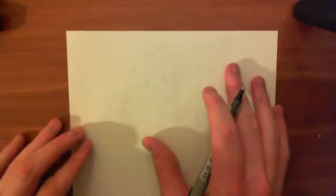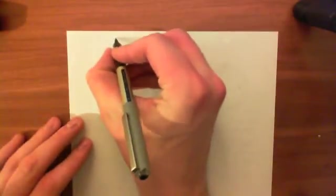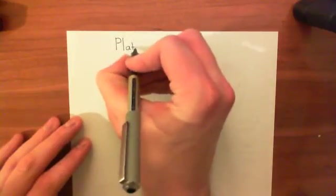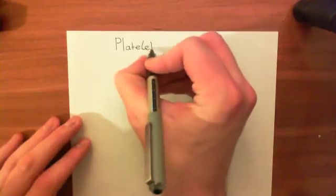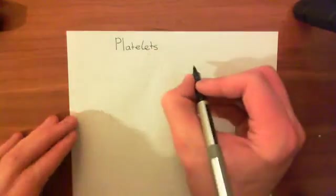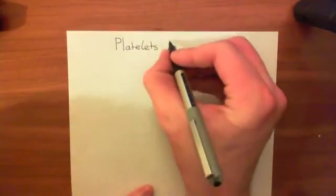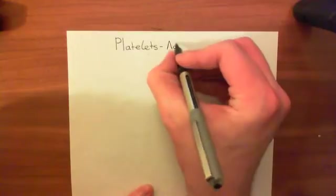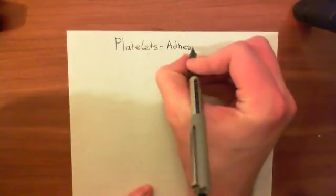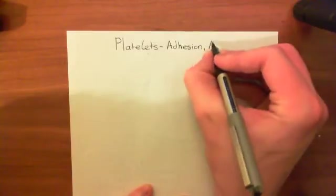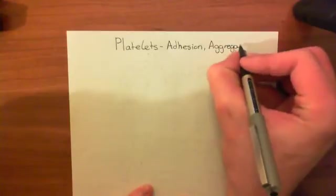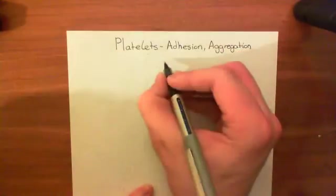Welcome to this next video in the playlist on inflammation and angiogenesis. In this video, we're going to talk about platelets. We've talked about the coagulation cascades, both of them, and now we need to look at the other major component of hemostasis, which is platelets. We're going to talk about their adhesion, activation, and aggregation. And then in the next video, we're going to put it all together and get a whole picture of what happens in hemostasis.